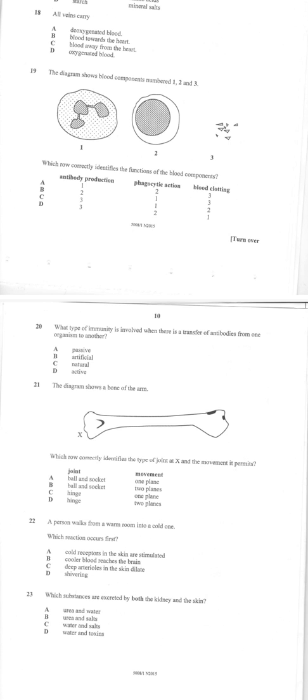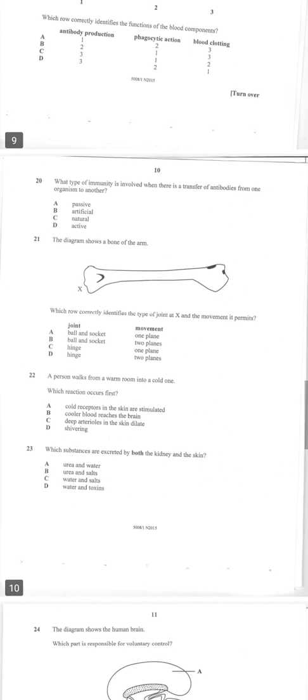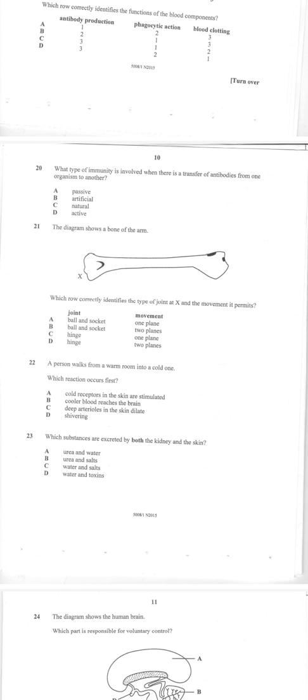Number 19: the diagram shows blood components with antibody production, phagocytic action, and blood clotting. Blood clotting is on number three, antibody production number one, phagocytic action number two. So number 19 is A.